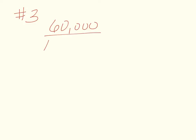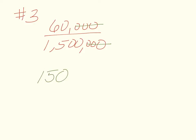Going on to number three: what is the death rate for a country with a population of 1,500,000 and 60,000 deaths per year? We have 60,000 divided by 1,500,000. Cross out zeros — three here and four here — so we have 150 going into 6. Here's our decimal; bring it up.